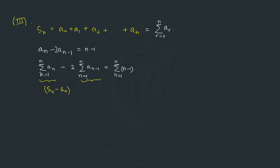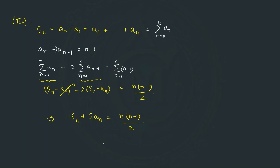Expanding further, the second summation equals Sₙ − aₙ, and the right-hand side sum equals 0 + 1 + ... + (n−1) = n(n−1)/2. Since a₀ = 0, the left side simplifies to −Sₙ + 2aₙ = n(n−1)/2. So we get the relation: Sₙ = 2aₙ − n(n−1)/2. Call this Relation 2.